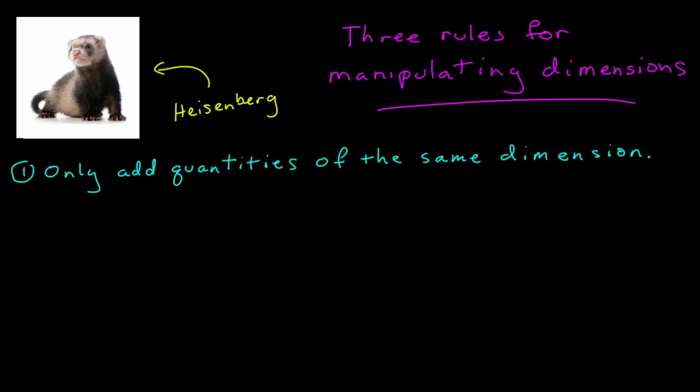So say Heisenberg had a mass of 5 in some units, ate some food, and later had a mass of 7 in that same units.